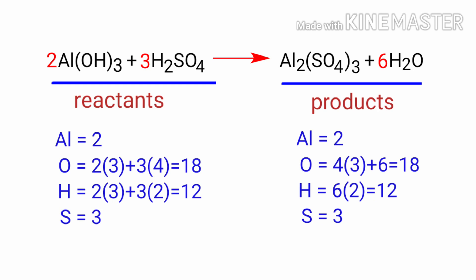The equation is now balanced. There are two aluminum atoms, eighteen oxygen atoms, twelve hydrogen atoms, and three sulphur atoms on both sides.